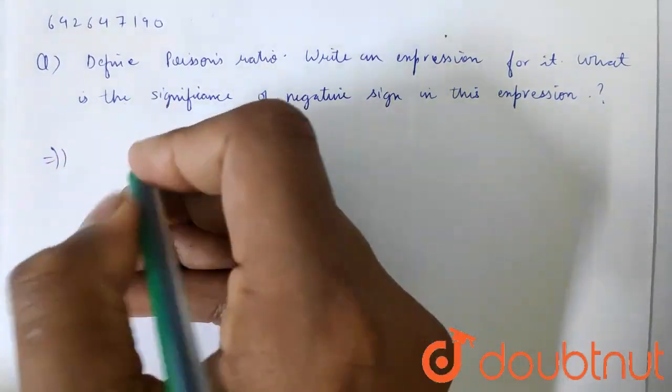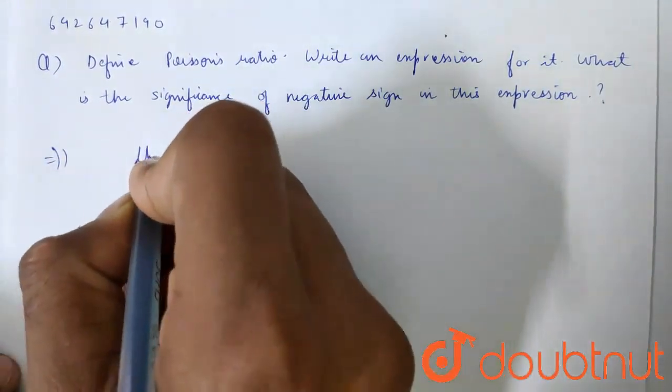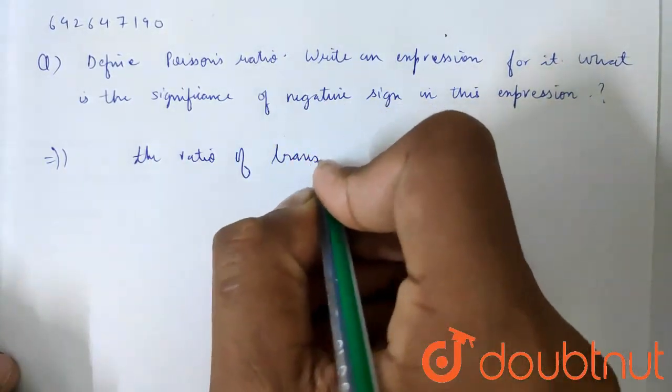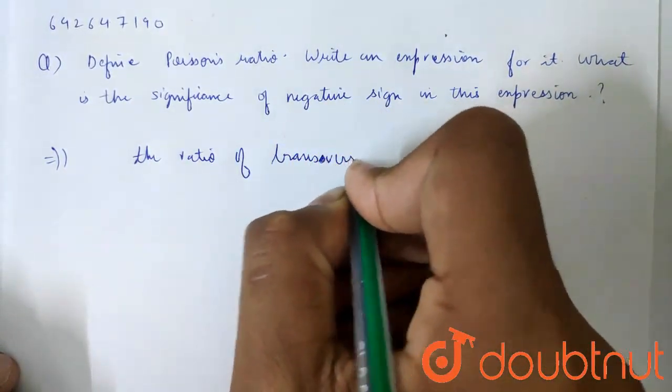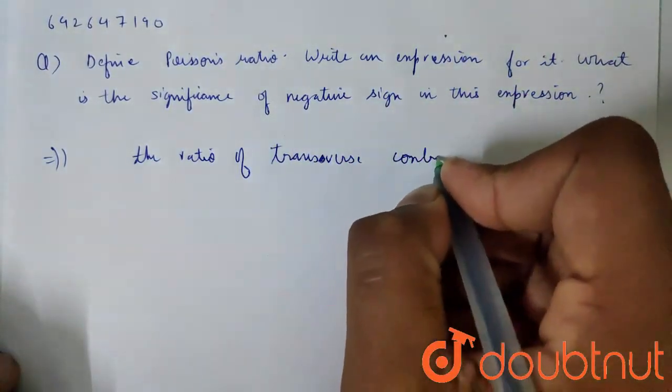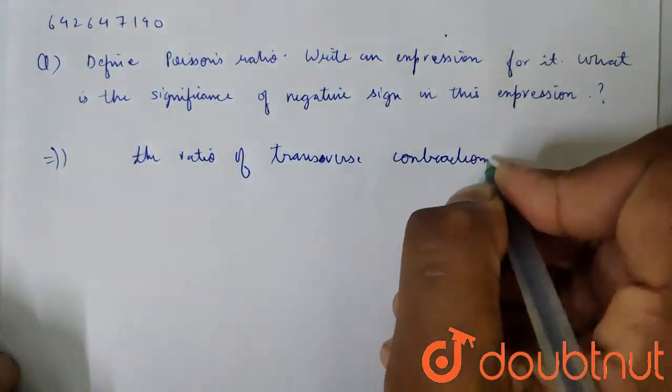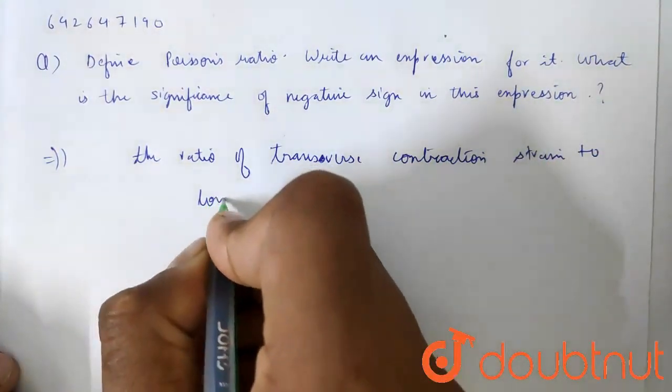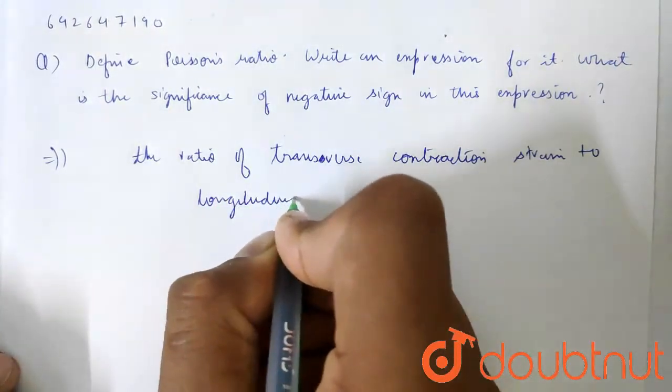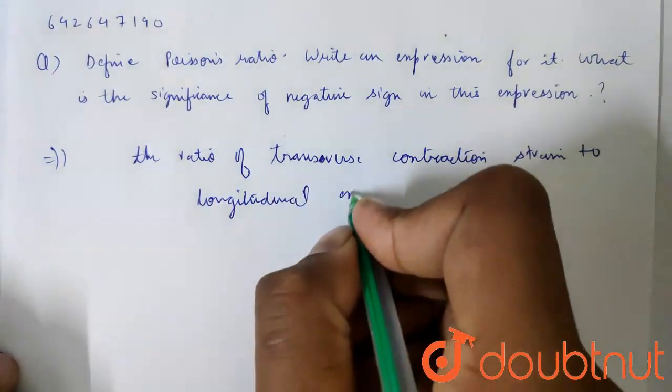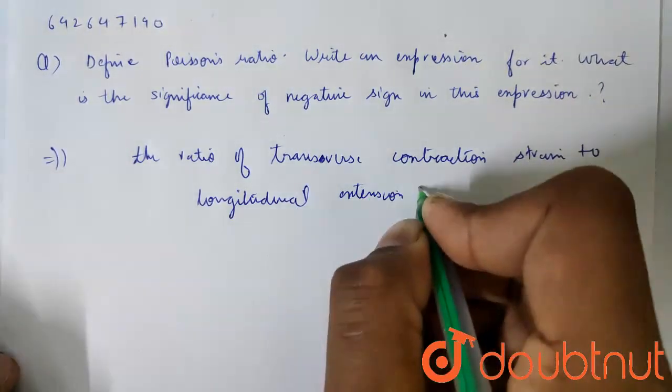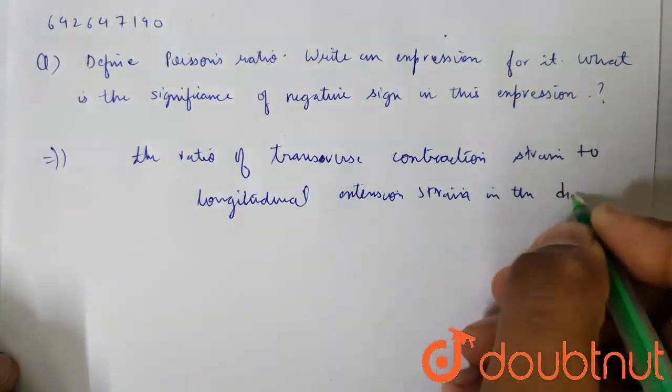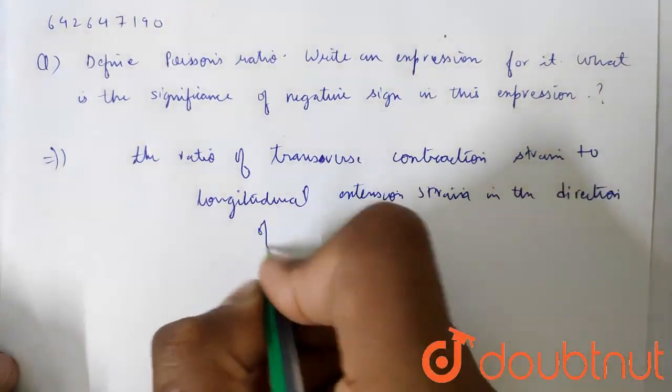Poisson's Ratio is the ratio of transverse contraction strain to longitudinal extension strain in the direction of applied force.